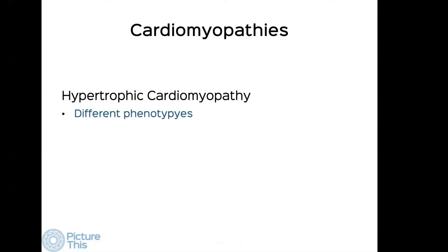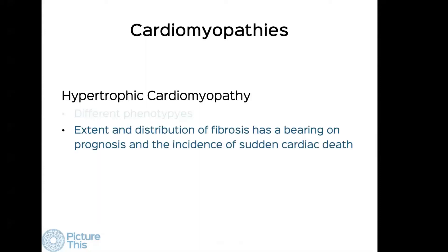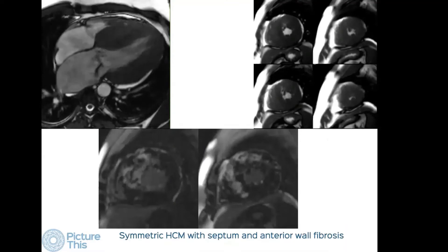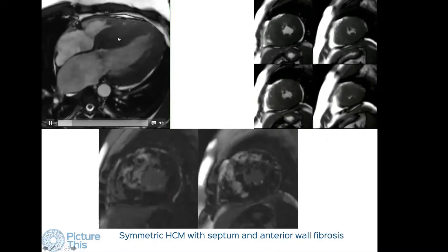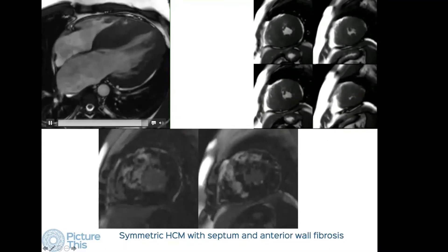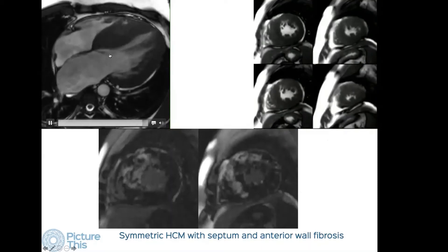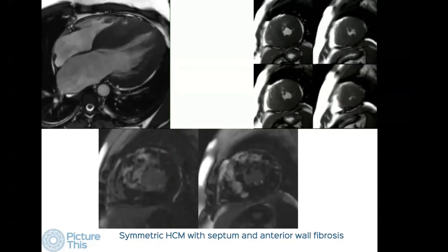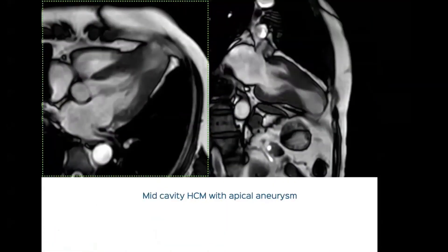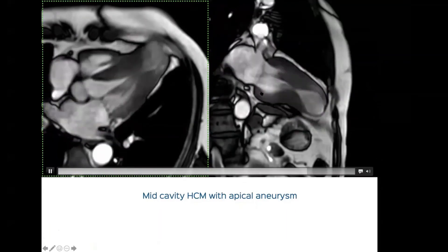HCM has different phenotypes visible on MR. The extent and distribution of fibrosis bears on prognosis — our electrophysiologists routinely ask us to quantify fibrosis, and if it exceeds 15 percent they usually consider placing an ICD. Here is a typical patient with marked hypertrophy; the end-diastolic wall thickness of the septum was about 29 millimeters. We can see the MR signal and the subaortic jet from subaortic obstruction due to systolic anterior motion (SAM).